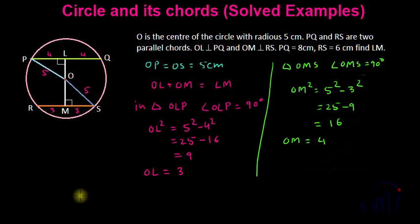So from here LM can be written as OL which is 3 plus OM which is 4 equal to 7 centimeters.